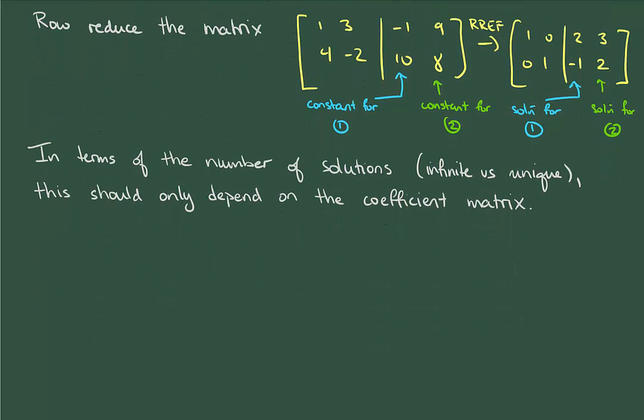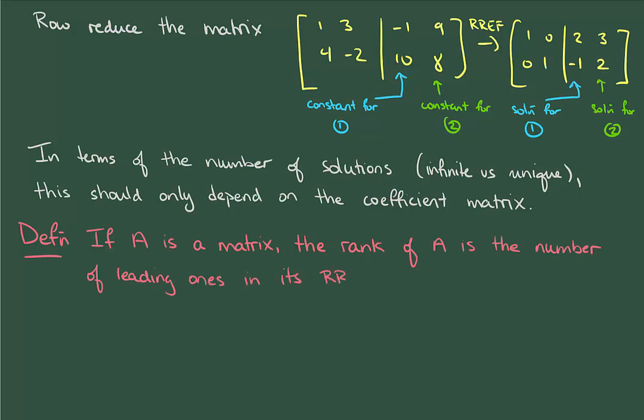And we saw in the last video that a system had infinitely many solutions if any of its columns fail to contain a leading one. So it seems like counting the number of leading ones might be a useful thing to define. And this leads us to the rank of a matrix, which is the number of leading ones in its row-reduced echelon form.